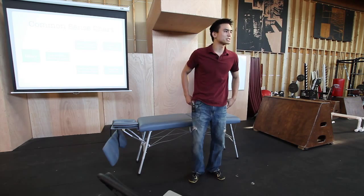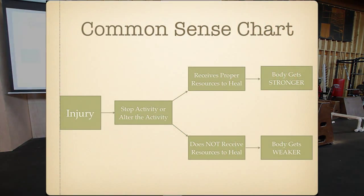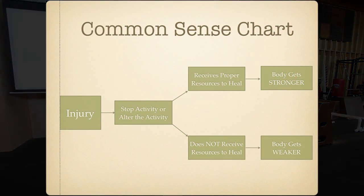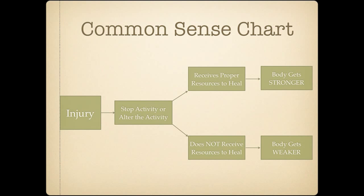Okay, so this is what I call the common sense chart. This is kind of explaining what I just told you. It's pretty straightforward. You get an injury, either you stop the activity or you alter the activity. And then you either heal or you do not heal. And then you either get stronger or you get weaker. I know it seems basic, but here's why I mention it.